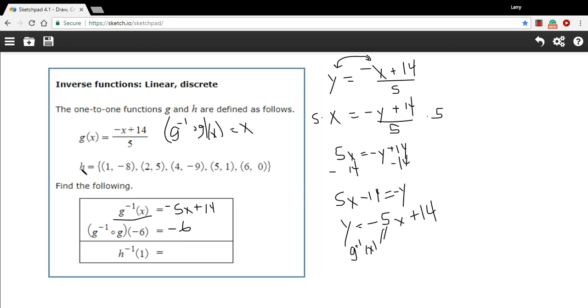Now here we have this function, 1 to 1 function h, that's a set of ordered pairs, and we want to find the inverse of 1. Well, if you wanted to find just h of 1, you'd look for 1 in the x and give the y value. If you want to find the inverse of 1, you look for 1 in the y, aha, right here, and you give the x value.